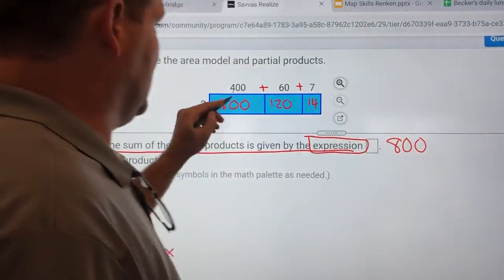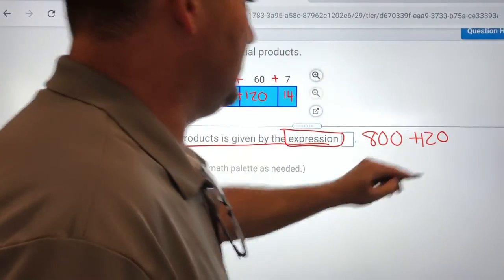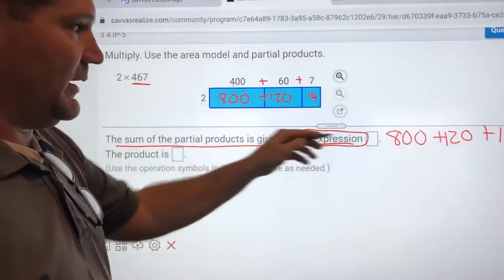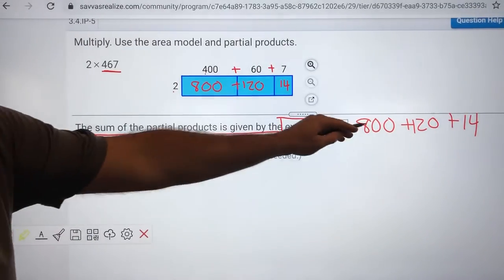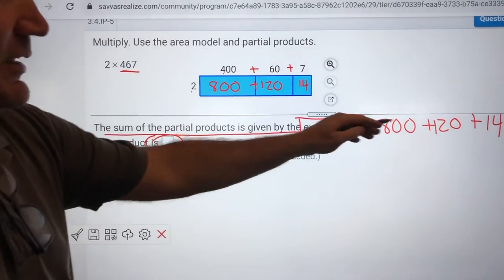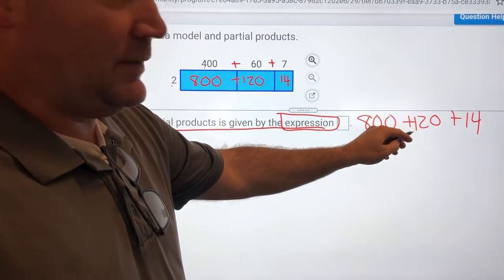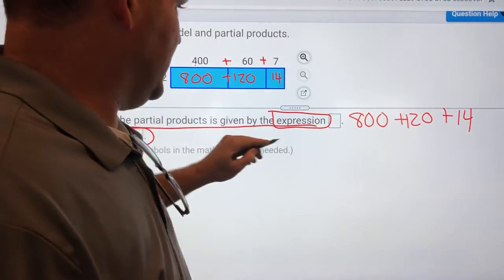800 plus 120, plus 14. There's my expression. There's my math problem. The product is the answer when I multiply. In this case, when I add them back together. So, 800 plus 120 is 920, plus 14 more is 934.